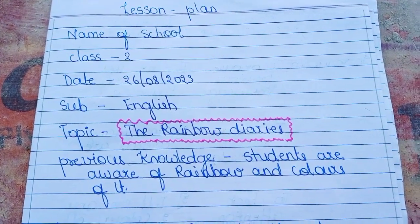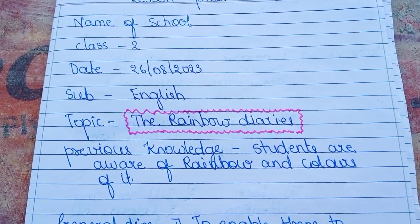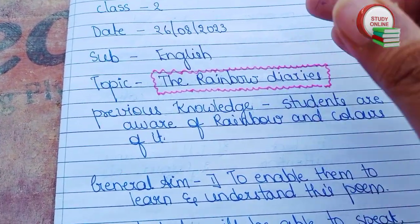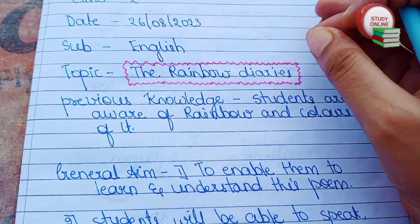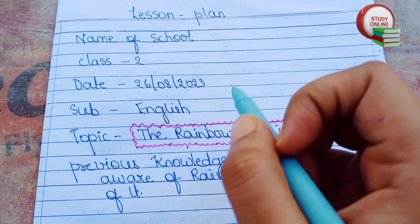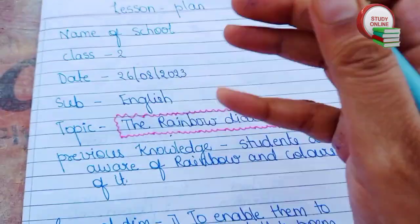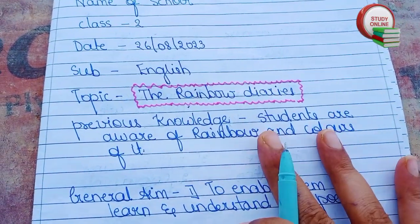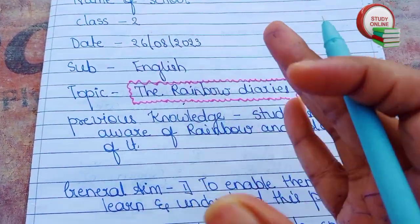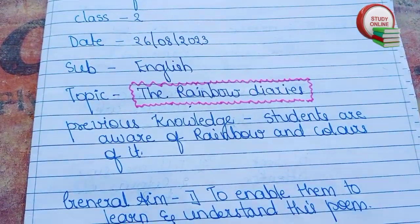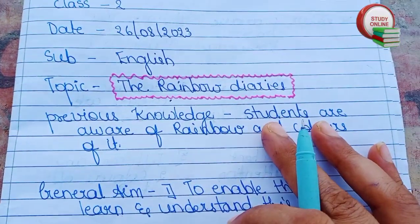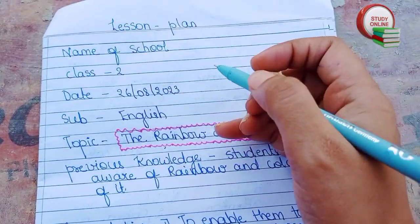Hi everyone, welcome back on my channel Nutan Online Study. Today in this video I'm going to show you how to make a lesson plan. For the first time, I'm making a lesson plan on a poem. This is the poem 'The Rainbow Diaries' for class 2. If you need lesson plans on different topics and subjects, check my channel — I have more than 200 lesson plans. Please do like, share, and subscribe.